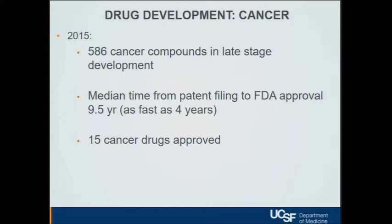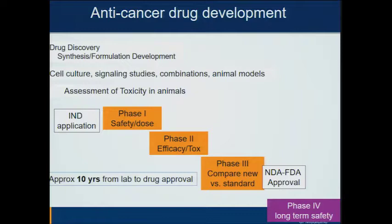Using cancer as an example: as of 2015, there were almost 600 cancer drugs in late-stage development, meaning in clinical trials. The time it took from patent filing to FDA approval averaged close to 10 years, although as fast as four years. That particular year, 15 drugs were approved. This process might be changing and improving in terms of speed, but it is by necessity a relatively slow process, given the important steps involved in taking a drug from an idea to FDA approval.